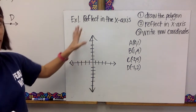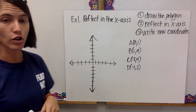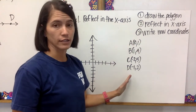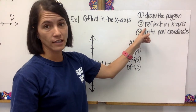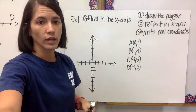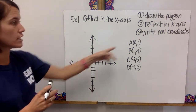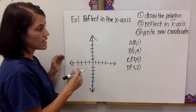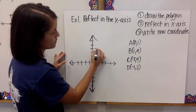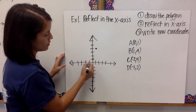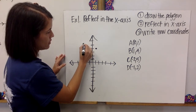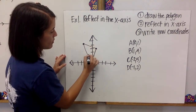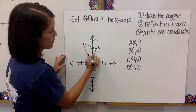Example one. I didn't have graph paper, so I just drew a coordinate plane — you can draw a coordinate plane in your notes, that is fine too. Reflect in the x-axis. The first thing we're going to do is draw this polygon. So A is (0, 1), B is (1, 4), C is (negative 2, 5), and D is (negative 1, 2). I'm going to connect these and draw my polygon with vertices A, B, C, and D.